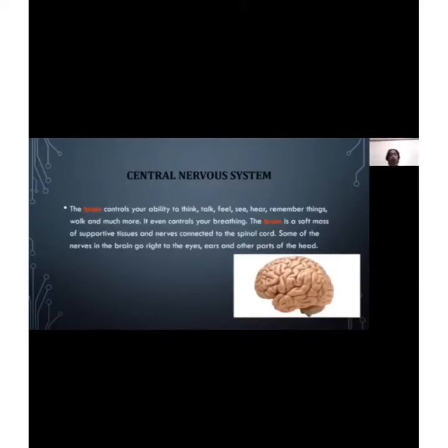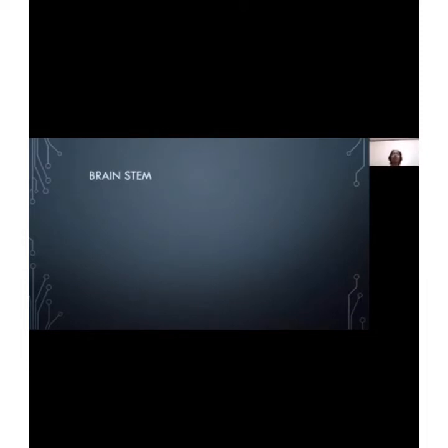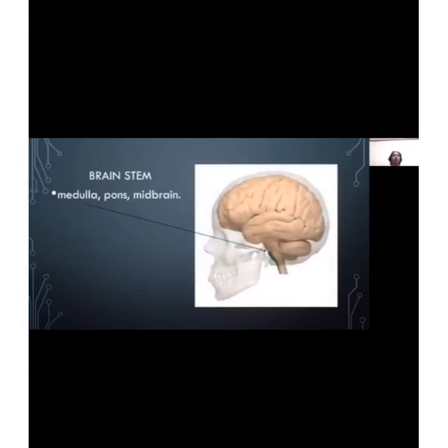The brain stem has three parts: medulla, pons, and the midbrain. The medulla is a long stem-like structure that makes up the lower part of the brain stem. It plays an essential role in passing messages between the spinal cord and brain, and in controlling autonomic activities such as heartbeat and respiration.